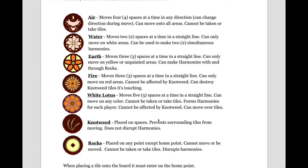The water piece moves two spaces at any time in a straight line, can only move on white areas, and can be used to make two simultaneous harmonies. So, unlike other pieces, the water tile can be involved in two harmonies, which can really help make the time in which it takes to make all four of your harmonies much quicker.